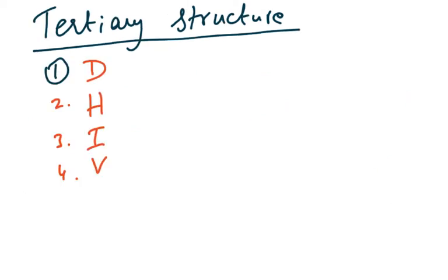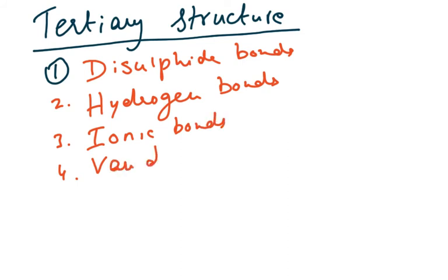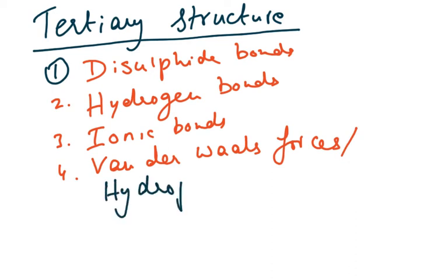The tertiary structure is made up of four types of bonds. A simple mnemonic is DHIV: D for disulfide bonds, H for hydrogen bonds (also present in secondary structure), I for ionic bonds, and V for van der Waals forces — also called hydrophobic/hydrophilic interactions.